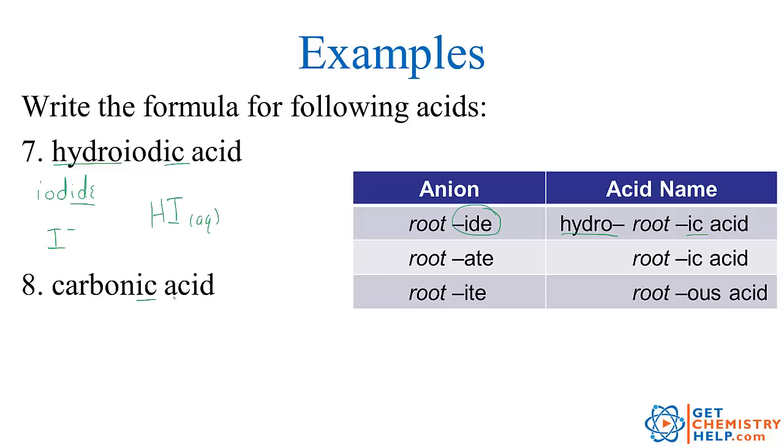How about carbonic acid? This one is ic but it doesn't have a hydro. So just ic must have come from just ate. So carbonic must have come from carbonate. The carbonate ion we learned is CO3 2 negative. So this now would need two hydrogen cations to balance that out. So H2CO3. And again of course aqueous because it's an acid dissolved in water.